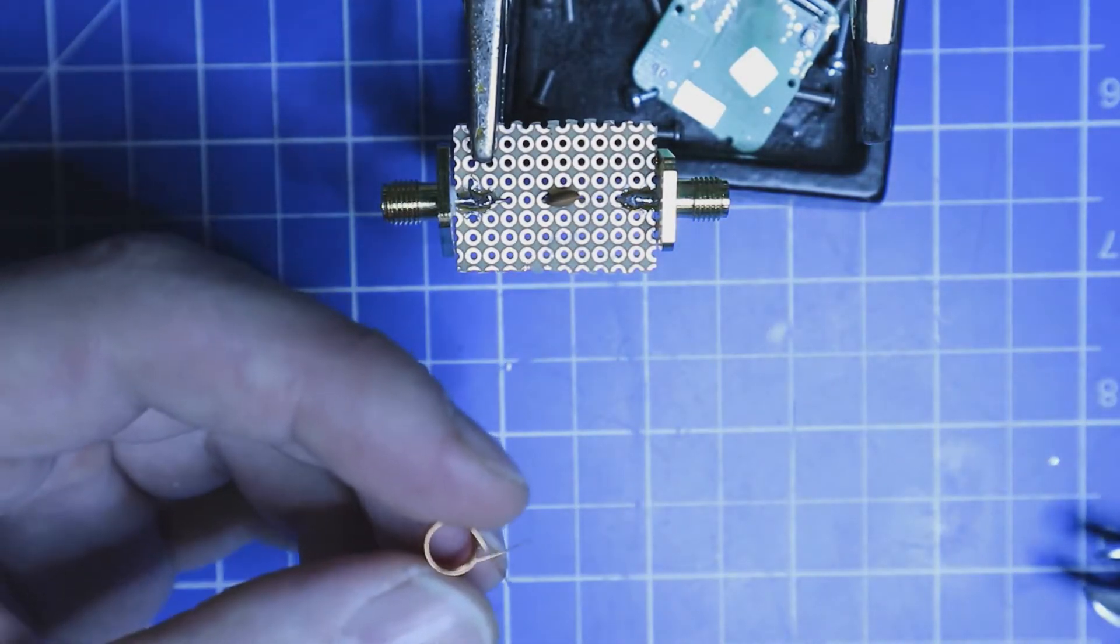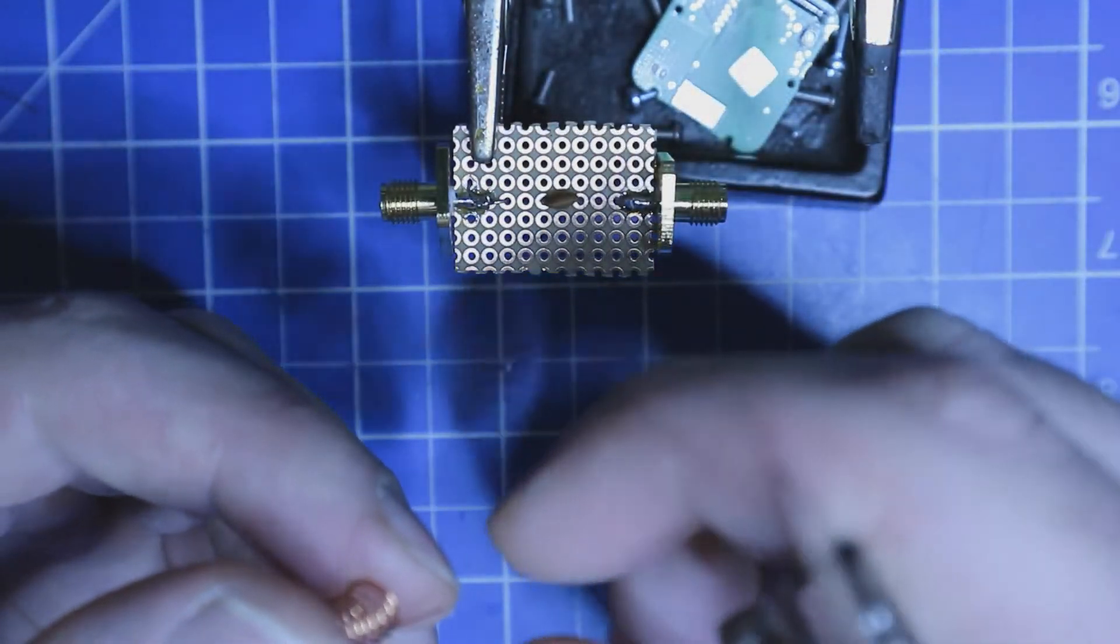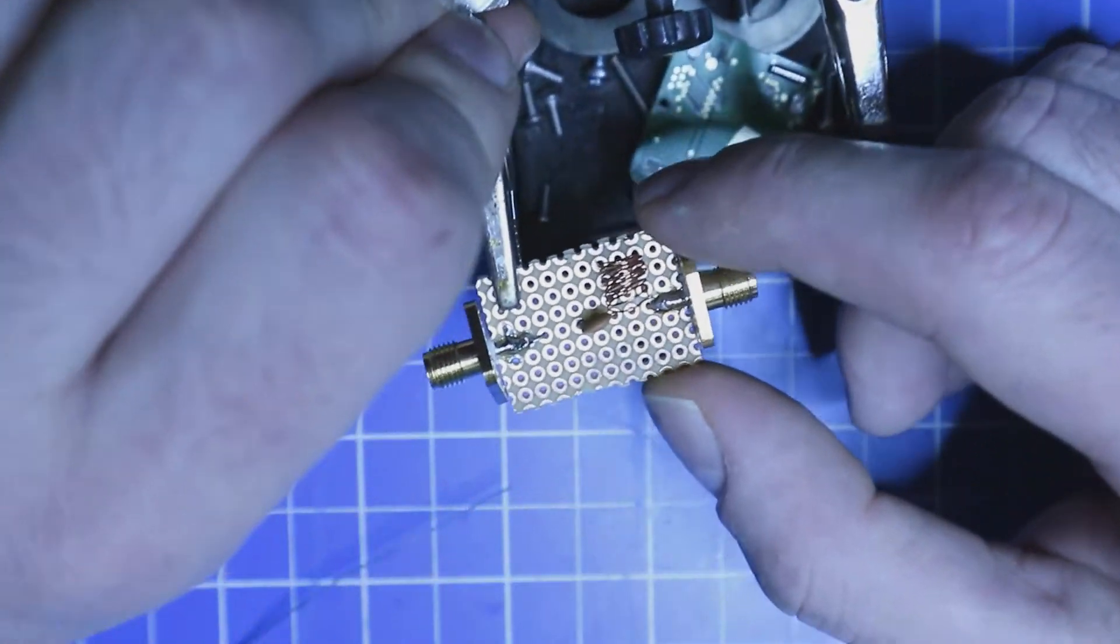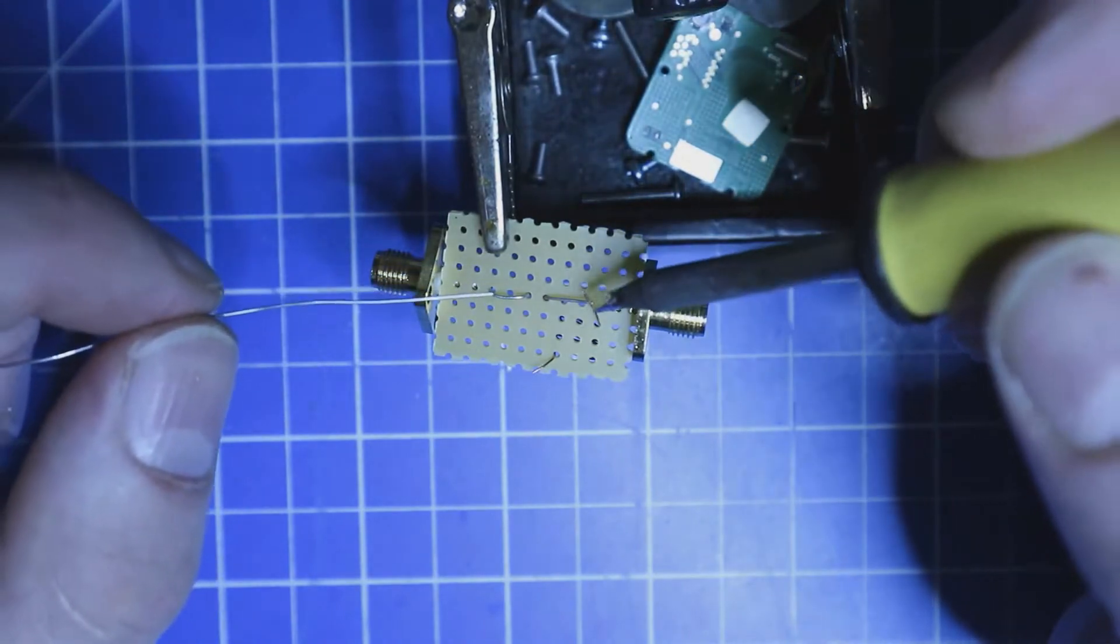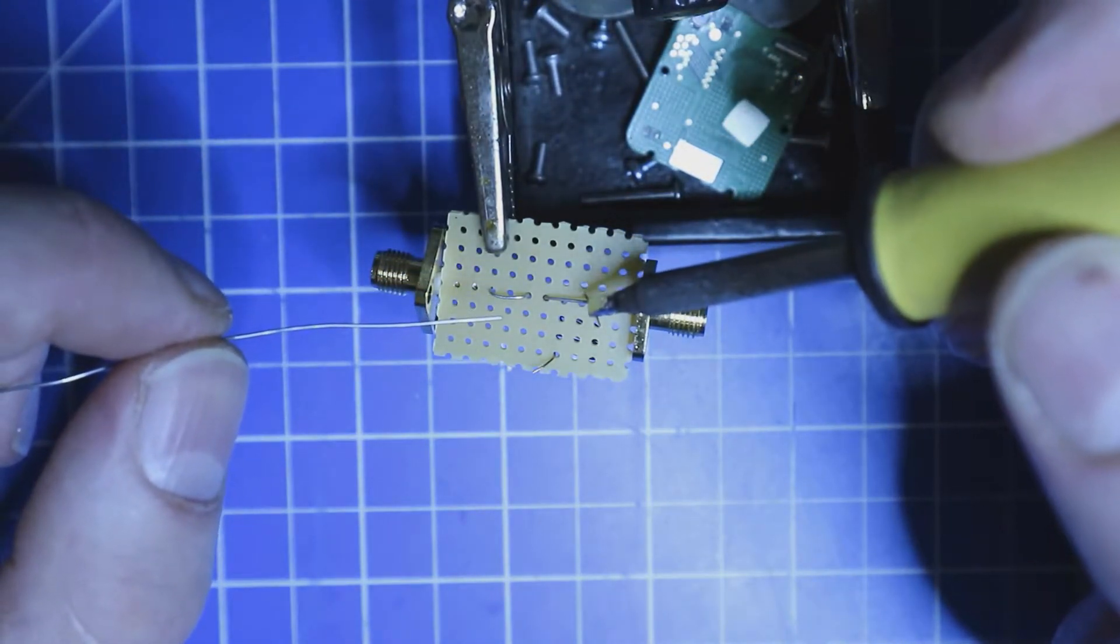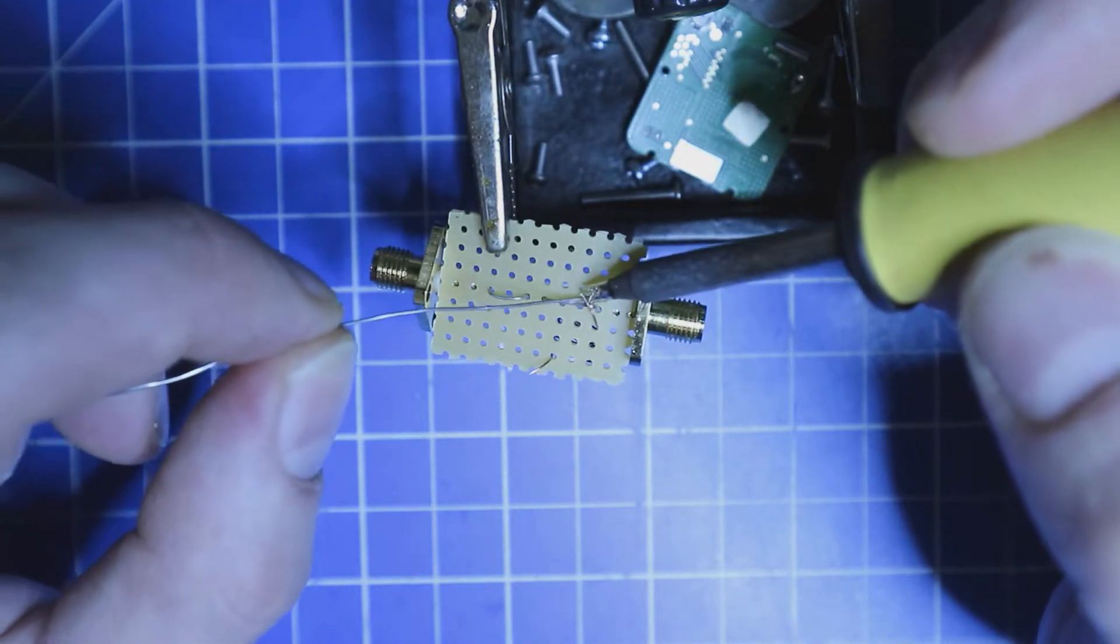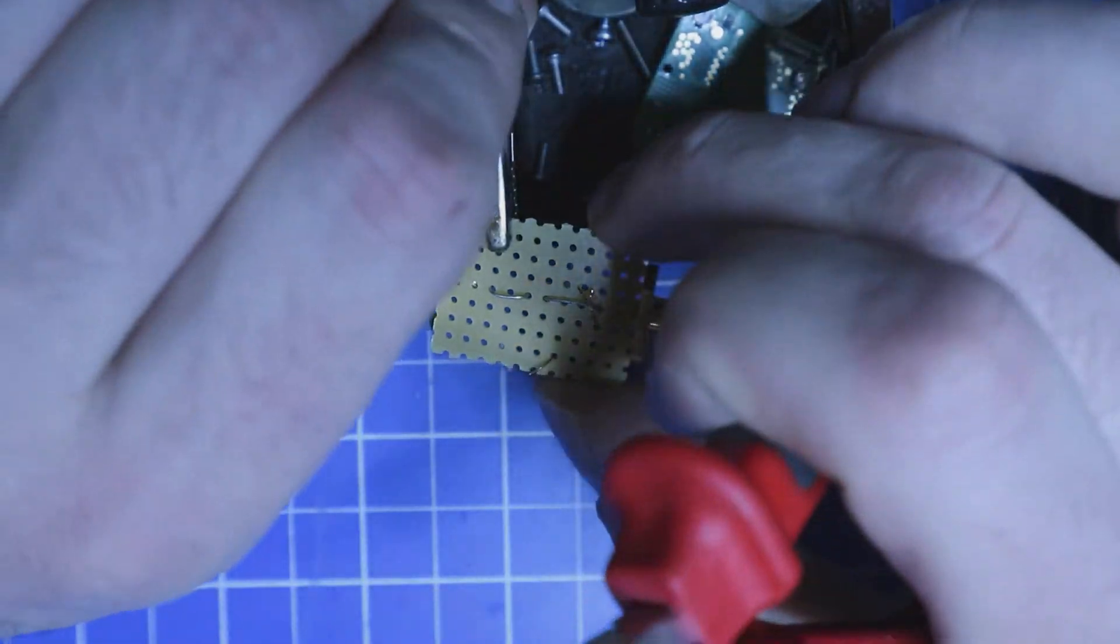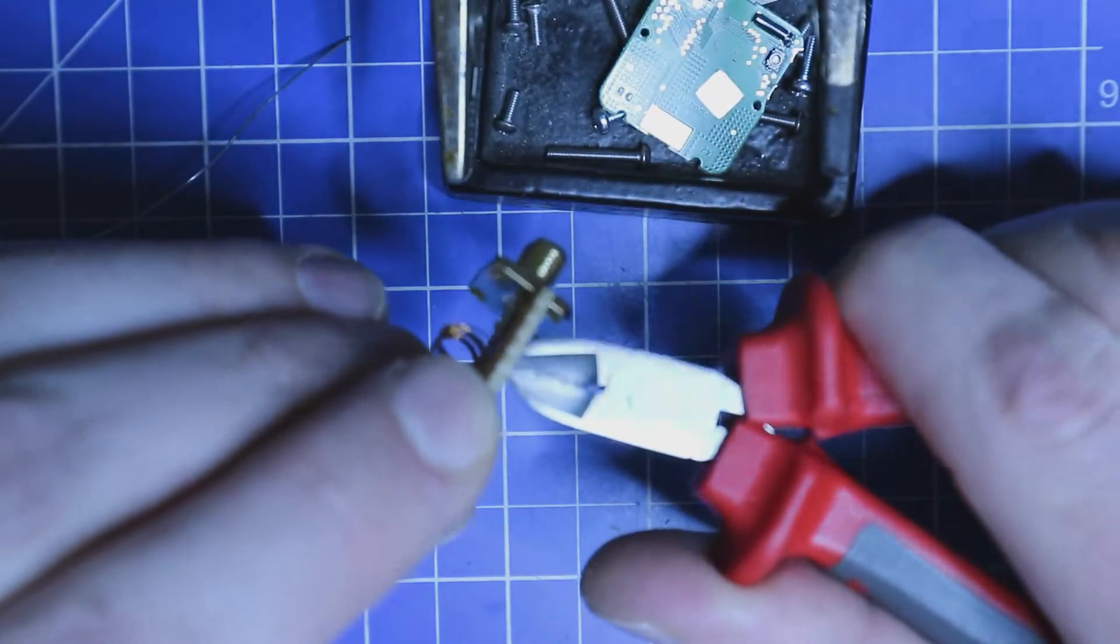And I'm also using the blade of a cutter knife to remove the coating. I'm going to solder the one side of the coil onto the lead of the capacitor here.